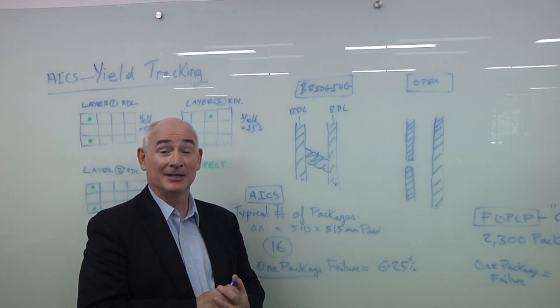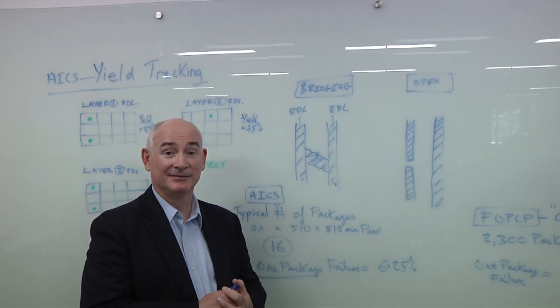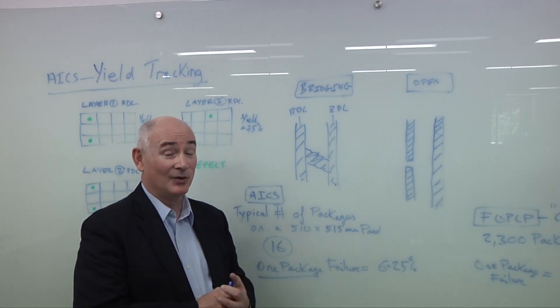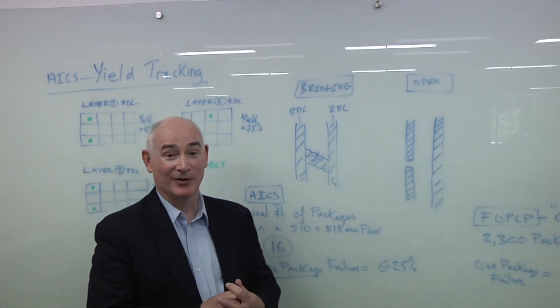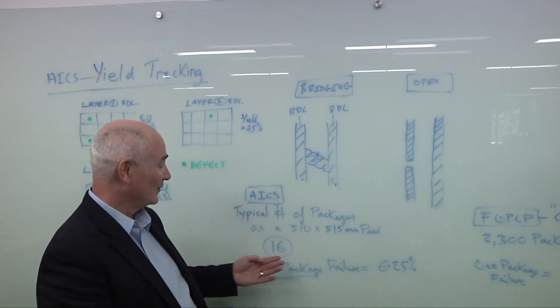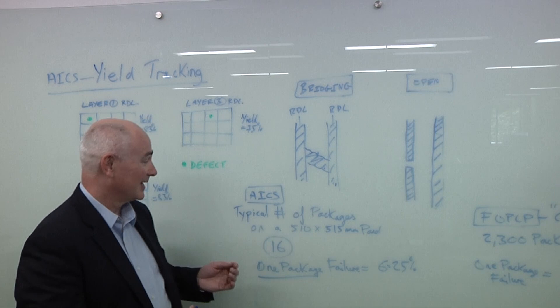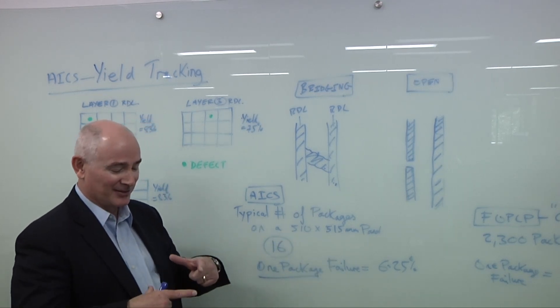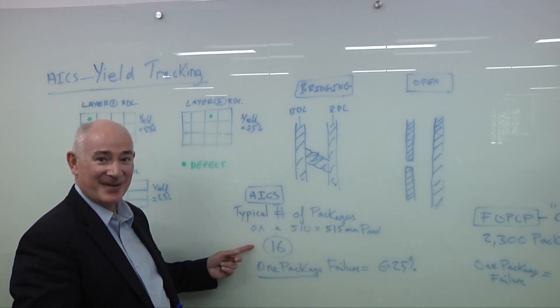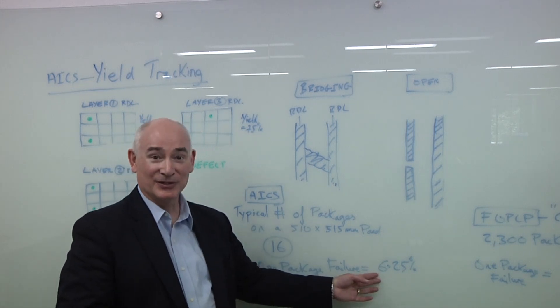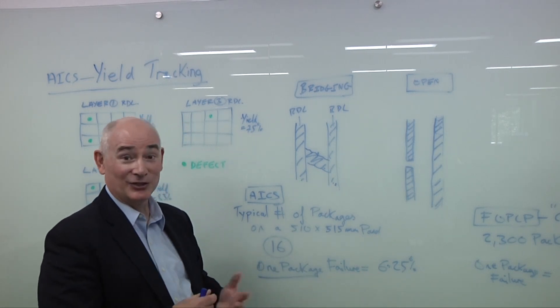So this is done layer by layer, right? Yes, that's correct. And so you now have more insertion points because the more layers you have, each one requires an insertion point. Well, that's right. And in fact, it makes it even more critical because as we mentioned before, we're talking about the hits of yield. So for instance, on an advanced IC substrate, you know, 510 by 515, typically at 120mm square package, be 16 packages on the panel. So if one package fails, it's a 6.25% reduction in yield, which is huge.